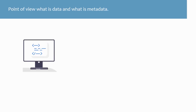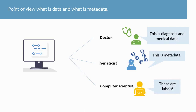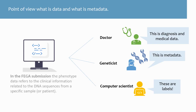Please note that the terms referring to phenotype differ between research fields. A geneticist will refer to them as metadata. A doctor might call them diagnosis and medical data, while a computer scientist will talk about labels. Also, telling metadata apart from data is not possible without knowing the context and the point of view — someone's data can be someone else's metadata.